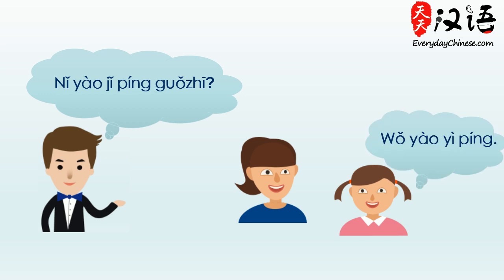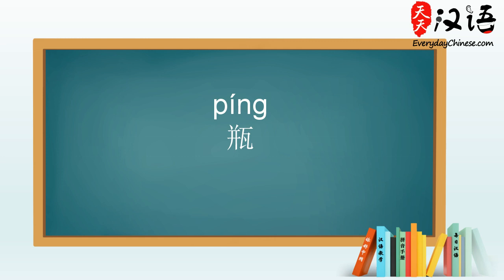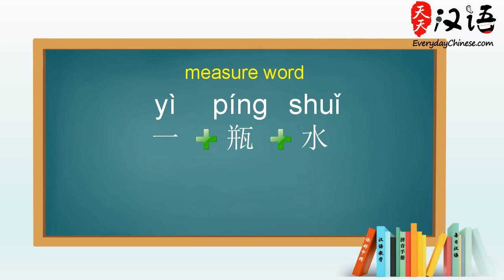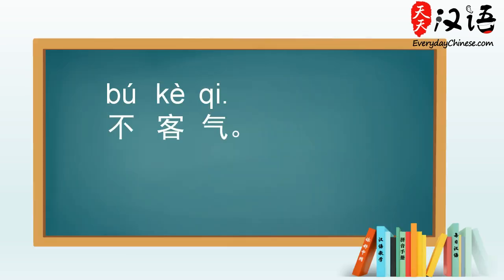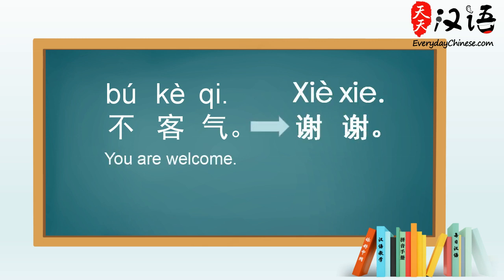We first introduced the measure word in lesson 21. A measure word is inserted between the number and the noun when describing quantities, and you should pick up the habit of using measure words when describing the quantity. 不客气 is the most common way to respond to 谢谢. There are also other ways to respond to thank you — do you still remember what they are?